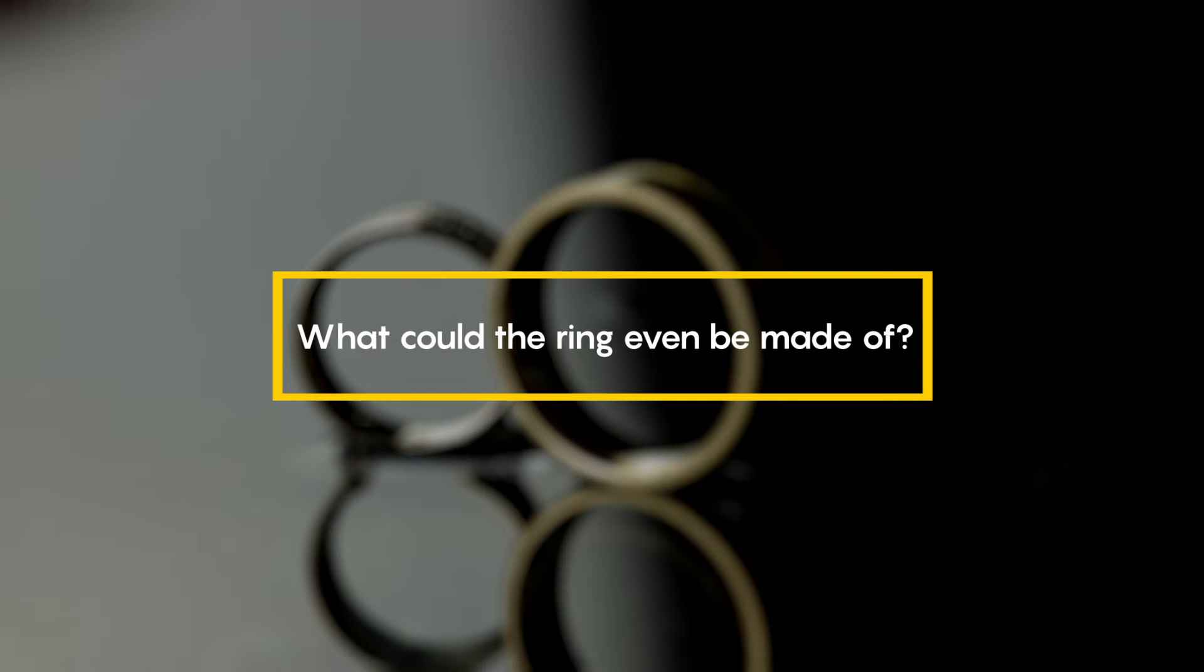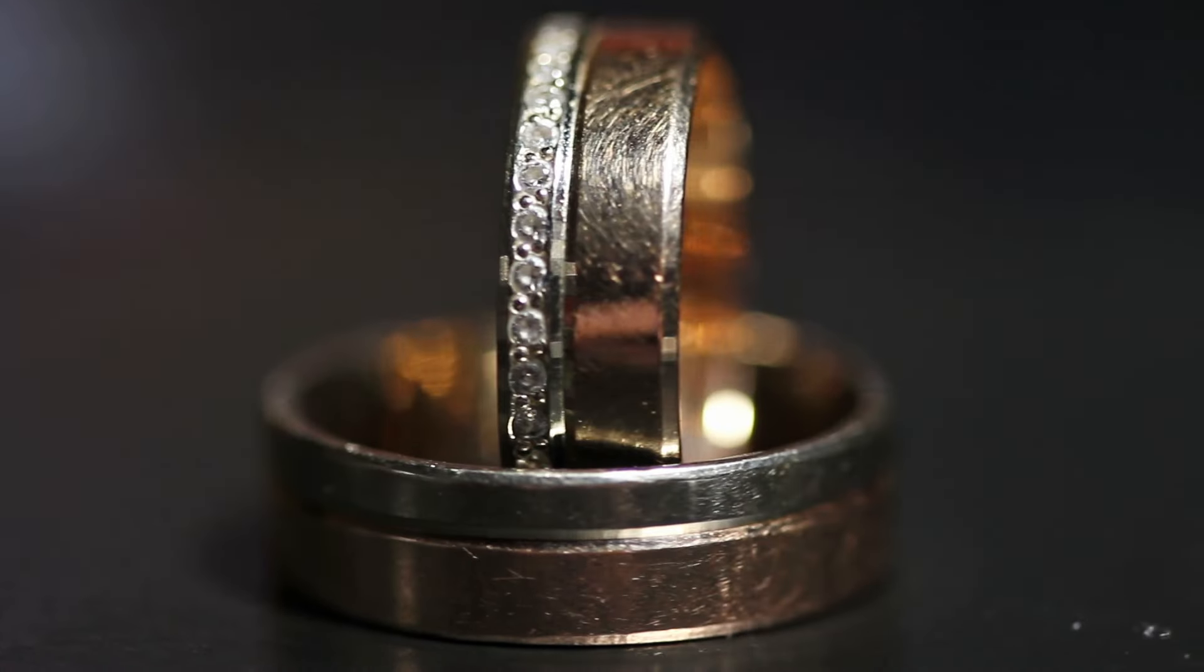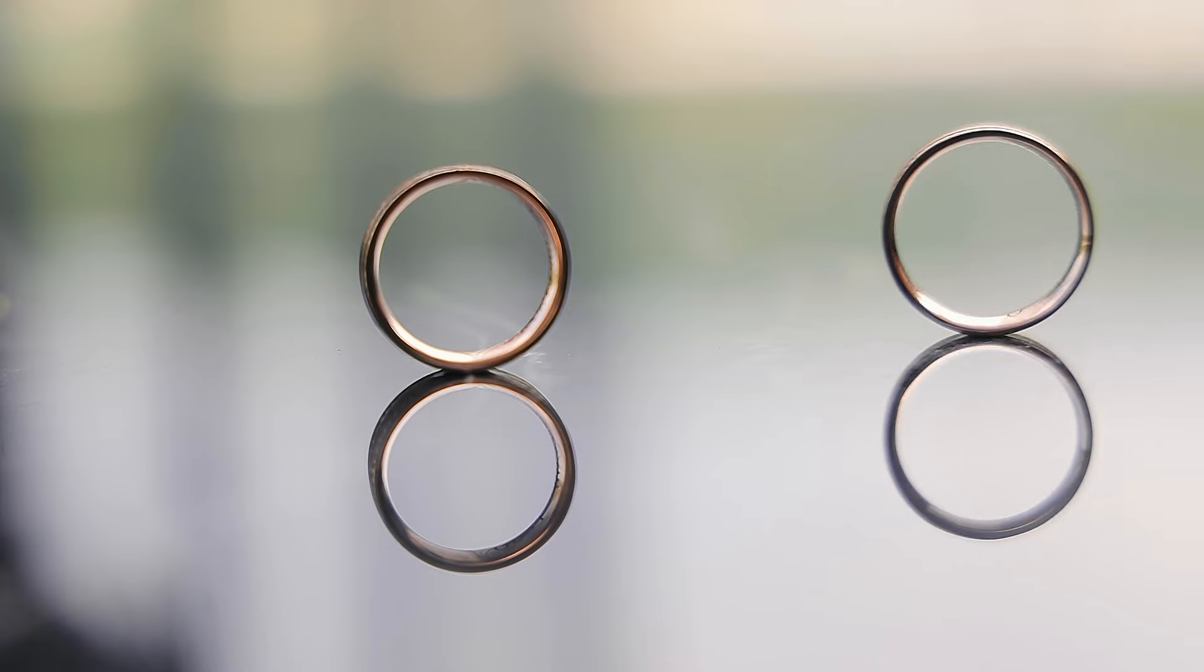What could rings be made of? Typically you will find rings made from tungsten, silver, gold, stainless steel, platinum, titanium, ceramics and alloys.